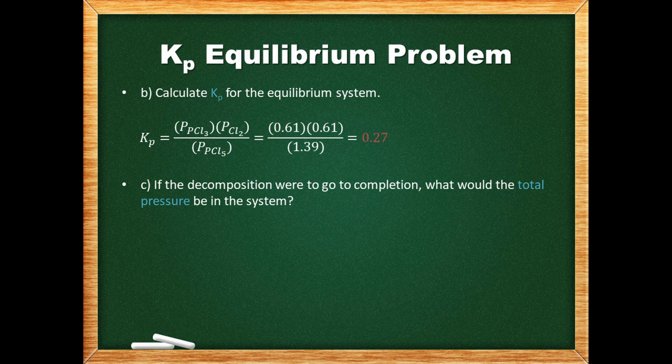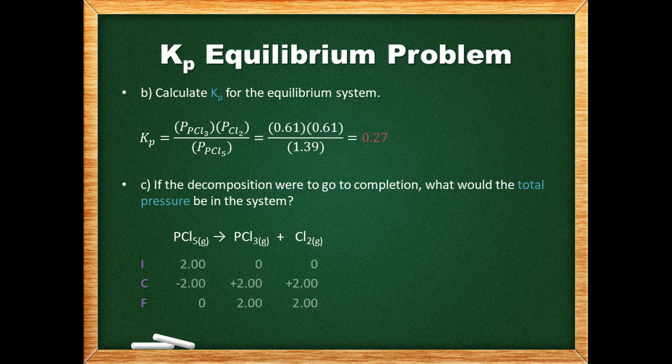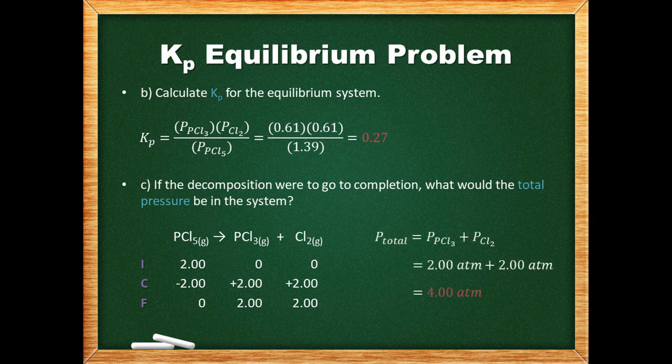Finally, if the decomposition went to completion, what would be the total pressure in the system? Filling out an ICF box, we know that since all the phosphorus pentachloride will react, its final partial pressure will be zero. Adding these final partial pressures together gives the total pressure of the system.